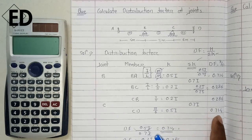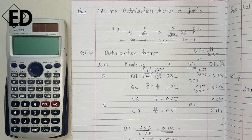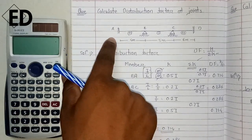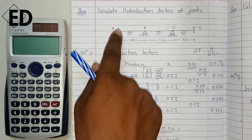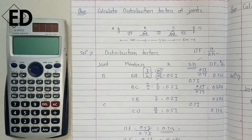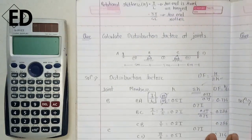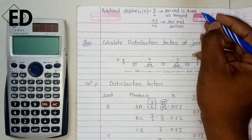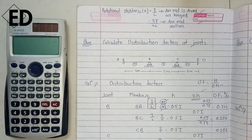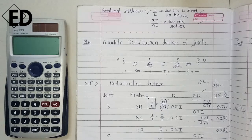It is very simple to calculate the distribution factor for a continuous beam. Also remember: if the far end is a roller, the rotational stiffness for that beam is (3/4)(I/L). Just remember these two formulas and you will be able to calculate the distribution factor for any continuous beam. Thank you.